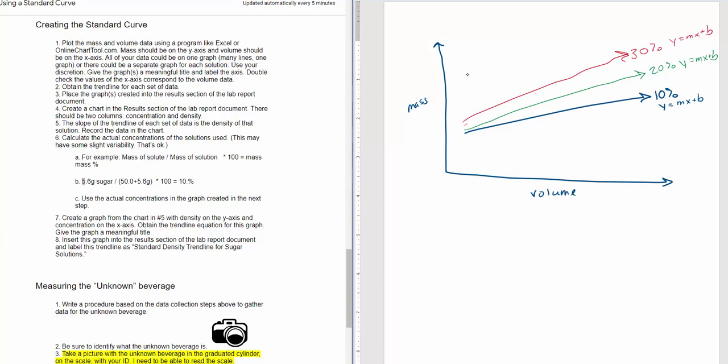Now because mass is on the y-axis and volume is on the x-axis, then the slope is mass over volume. So that slope is the density.